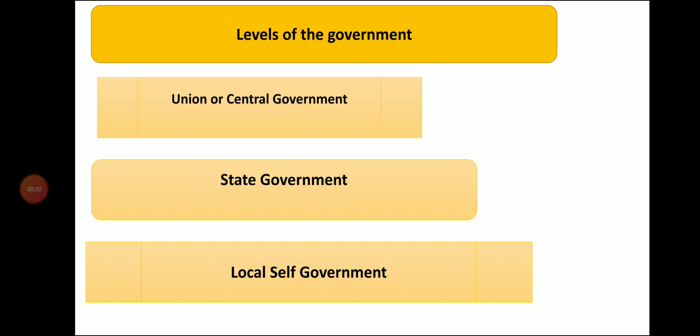Now, levels of the government. Do you know, students? There are three levels of government in our country. Number one is union or central government, number two is state government, and number three is local self government.